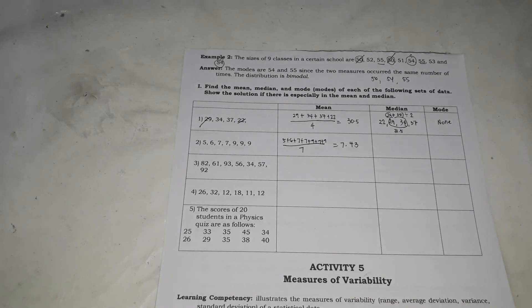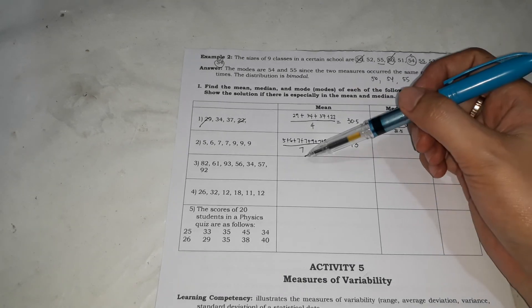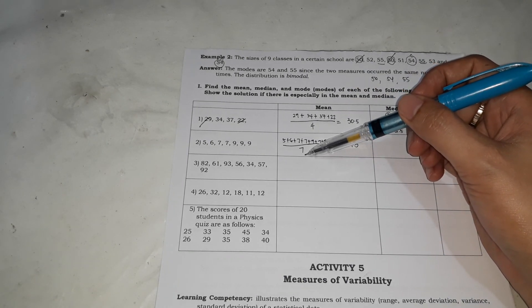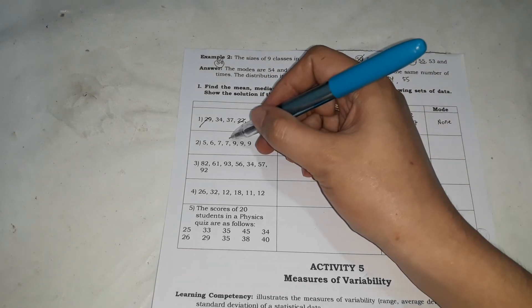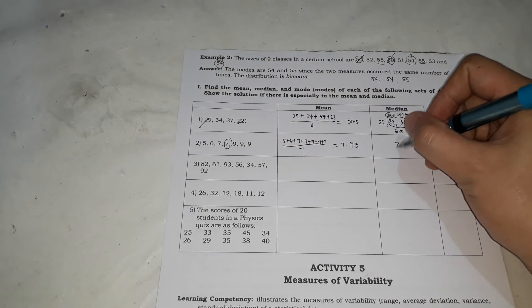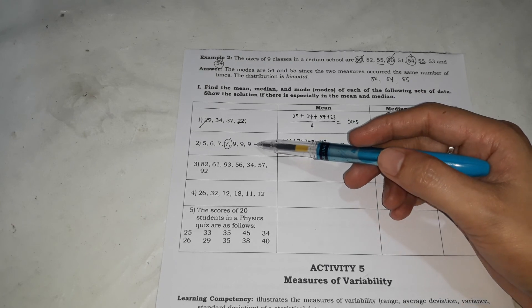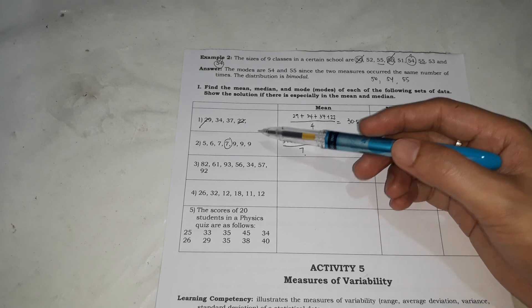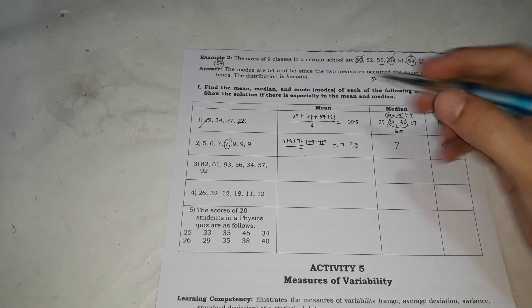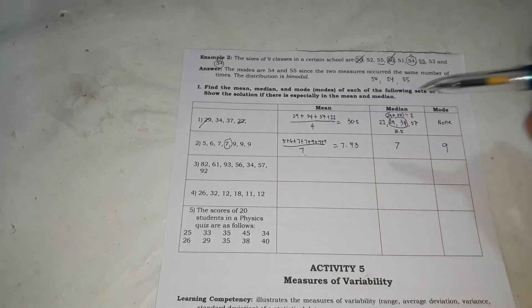Next, after that is we're going to identify the median. Kasi 7 sila. So ibig sabihin may gitna. Yung mga odd numbers may pinakagitna. Ayan. So 7. Next, yung pinakamaraming number na inulit, pinakamaraming inulit is 9. So kasi ang 7 kadalawa lang. There is 3, 9.